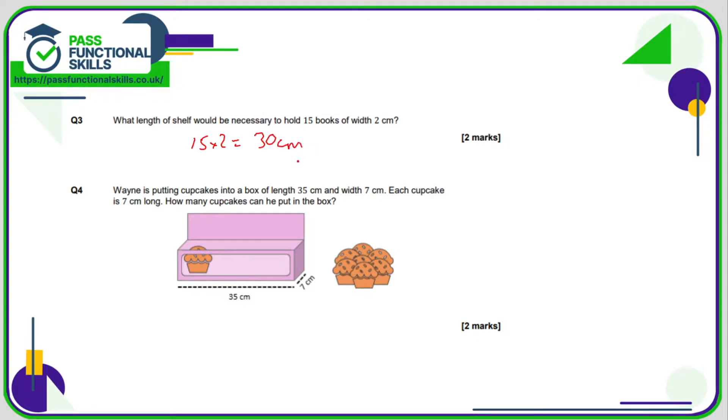So Wayne's putting these cupcakes into a box, and each cupcake has a length of 7 centimeters. So 7 centimeters from here to here. And if the box is 35 centimeters by 7, well, we can clearly only get one in width ways. But length ways, 35 divided by 7 is 5, so he can only get 5 cupcakes into that box.